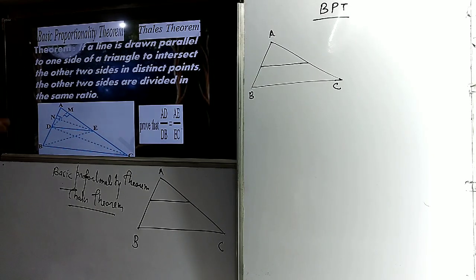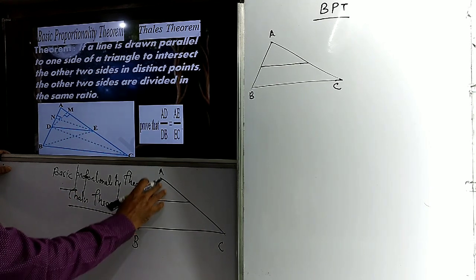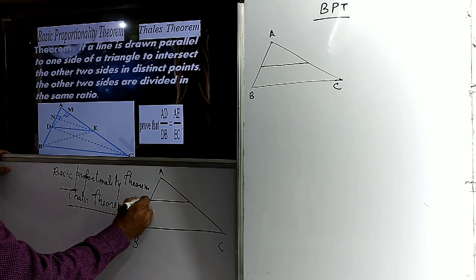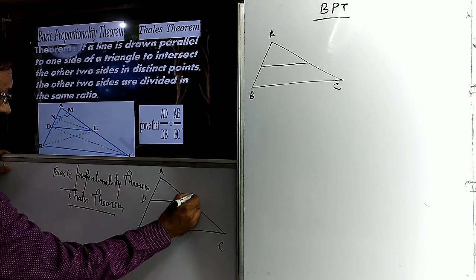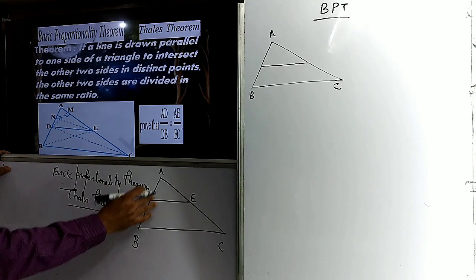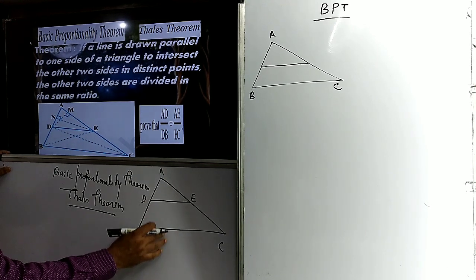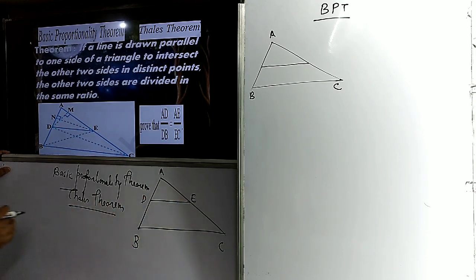Now let us do the Basic Proportionality Theorem, which is also called Thales' theorem. The Basic Proportionality Theorem states that if a line is drawn parallel to one side of a triangle — let us say triangle ABC — then it intersects the other two sides and divides them in the same ratio. A line segment drawn parallel to one side of a triangle divides the other two sides in equal ratio.